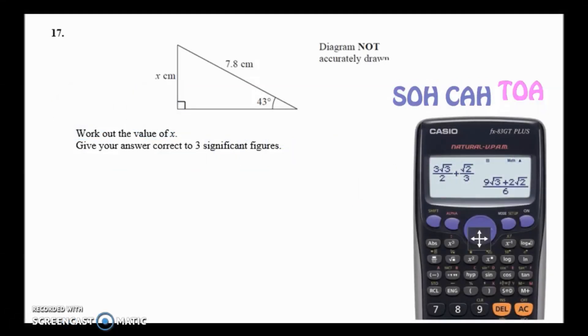This problem involves a right-angled triangle. That's important - it has a right angle. We need to work out the value of x, referring to the length of this side here, and give the answer to three significant figures so we'll round it at the end.